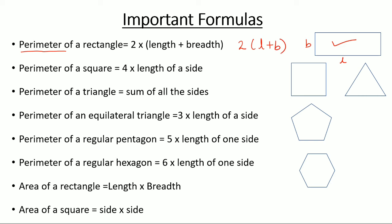Perimeter of a square equals 4 times length of a side. A square has 4 equal sides, so it's 4 times length of a side.